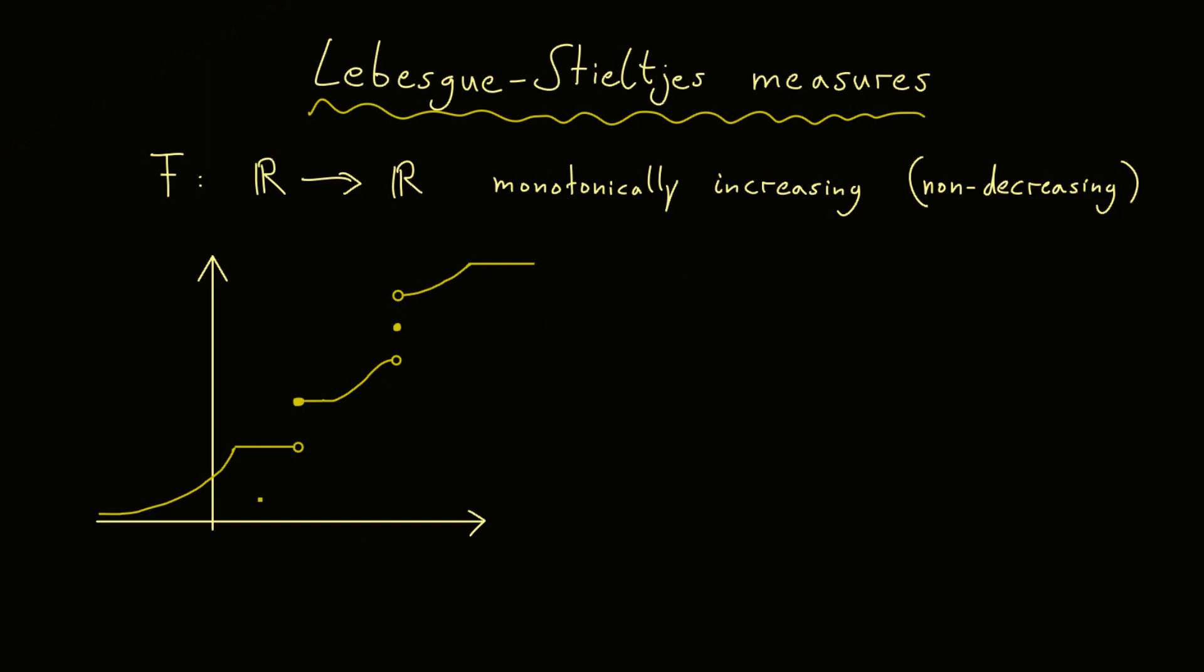In particular, it's allowed that the function is constant at some parts. And there could be also points where the function is non-continuous, so where we have jumps. But of course, the jumps have to go upwards.